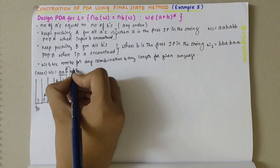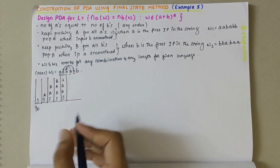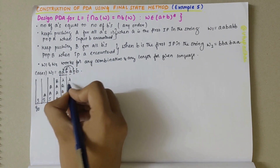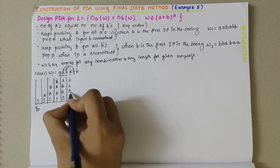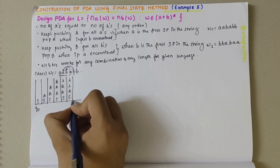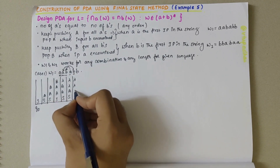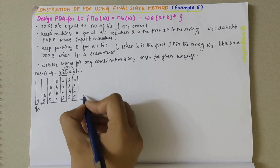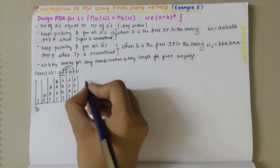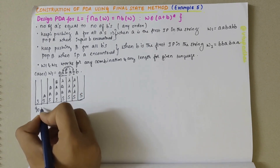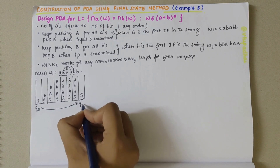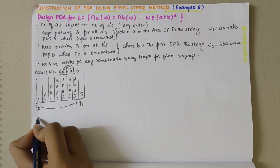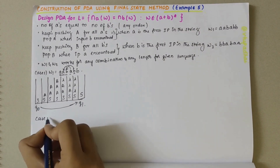This B pops for this A, so whenever B is encountered, A becomes lambda. For the next B, that A also becomes lambda. Finally the stack is empty and the state changes from Q0 to Q1. This completes the trace for the first string w1.